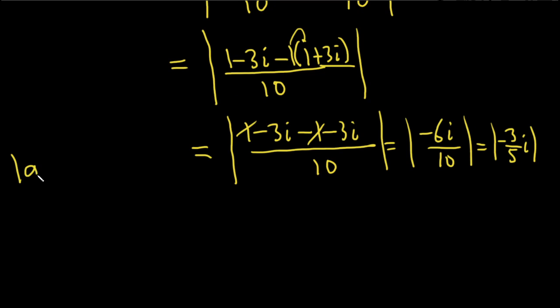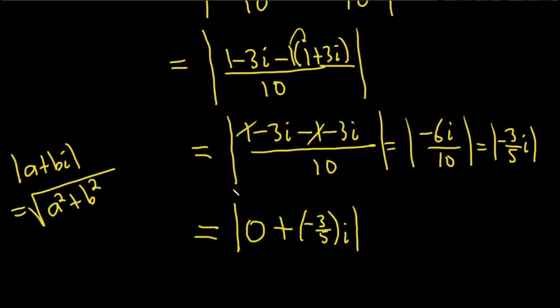The formula for the modulus is this one. a plus bi, and this is equal to the square root of a squared plus b squared. So here, what we'll do is we'll write it like this, just to really make it clear, 0 plus negative 3 fifths i. Just really want you to see how it fits together so you really understand it.